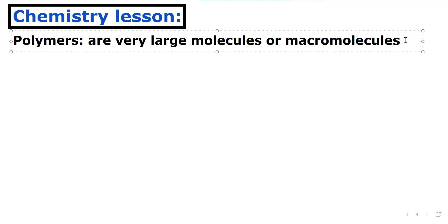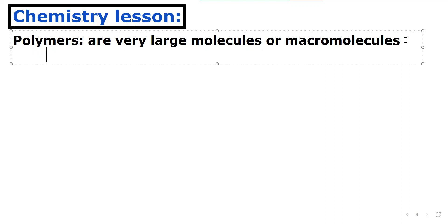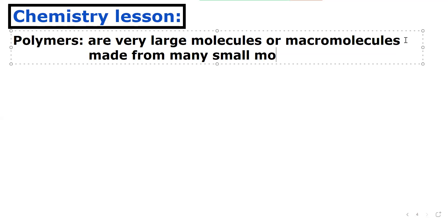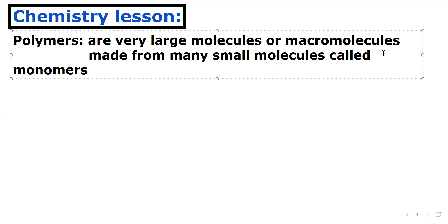Mono means one, and poly means multiple. So polymers are very large molecules, or macromolecules, made from many small molecules — all of which are called monomers.